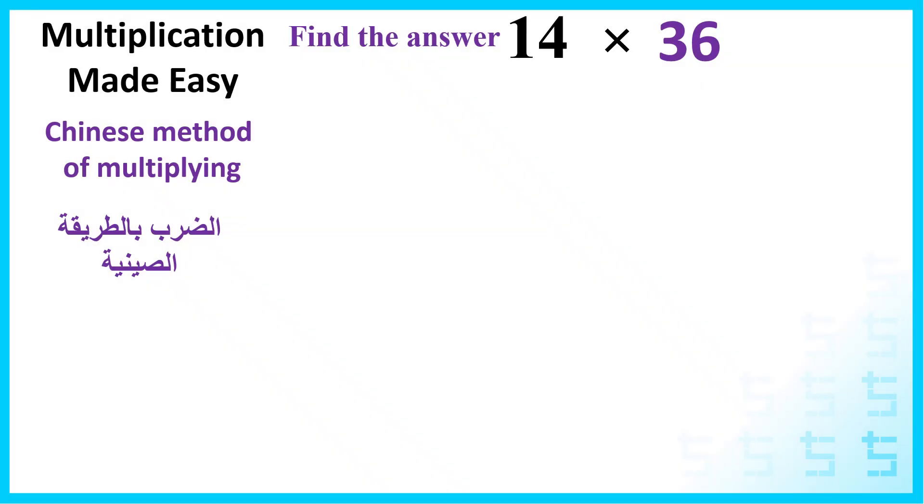Multiplication made easy: Chinese method of multiplying. Find the answer 14 times 36. We will draw a 2 by 2 table because each of the numbers has two columns.